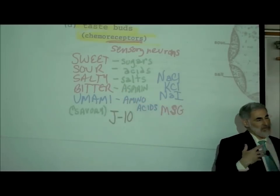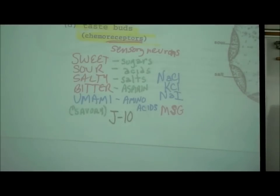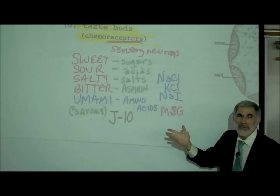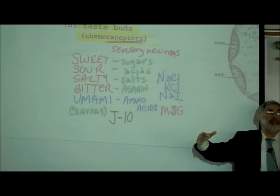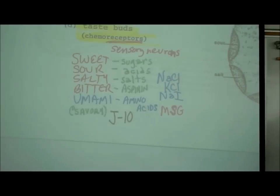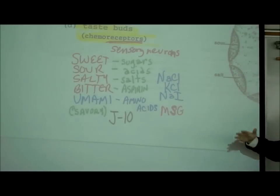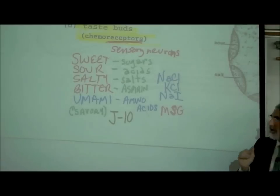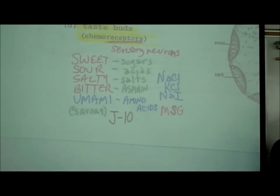What makes something taste salty are salts. In chemistry, a salt is a metal and a non-metal. The most famous salt is sodium chloride. Potassium chloride is sold as a salt substitute for people reducing sodium intake — it also tastes salty, a little bit bitter. Sodium iodide is an iodized salt. Anything that's a metal and a non-metal generally tastes salty.